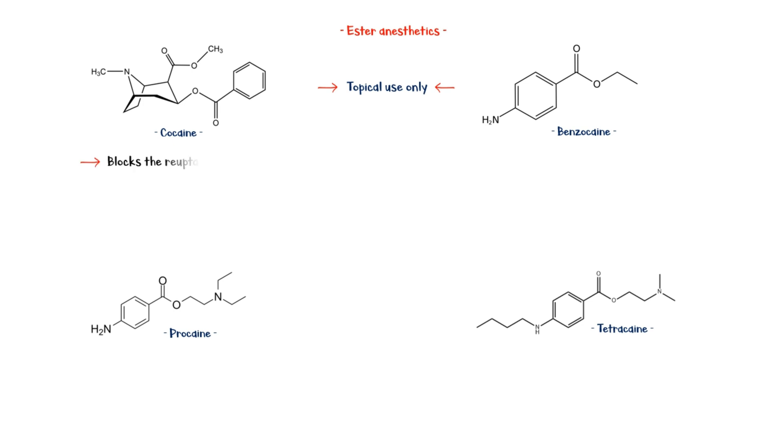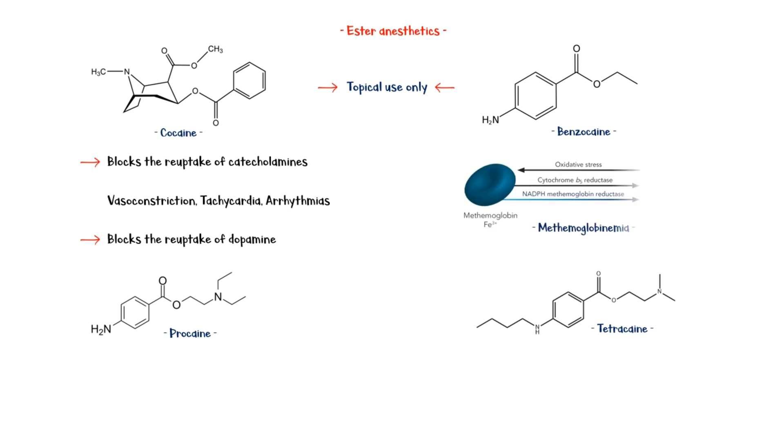Cocaine is the only local anesthetic that blocks the reuptake of catecholamines, leading to vasoconstriction, tachycardia, and arrhythmias. It also blocks the reuptake of dopamine, which leads to its associated euphoric feeling. Benzocaine can cause methemoglobinemia.